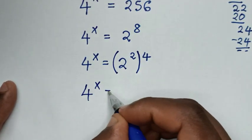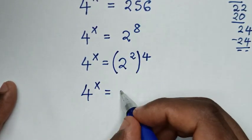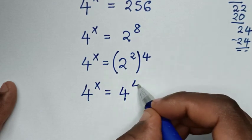So it will be 4^x equals 2^2, which is 4, to the power of 4.